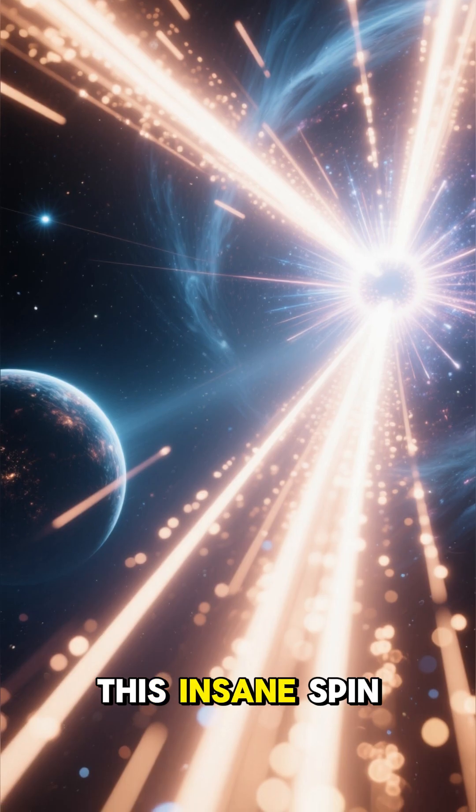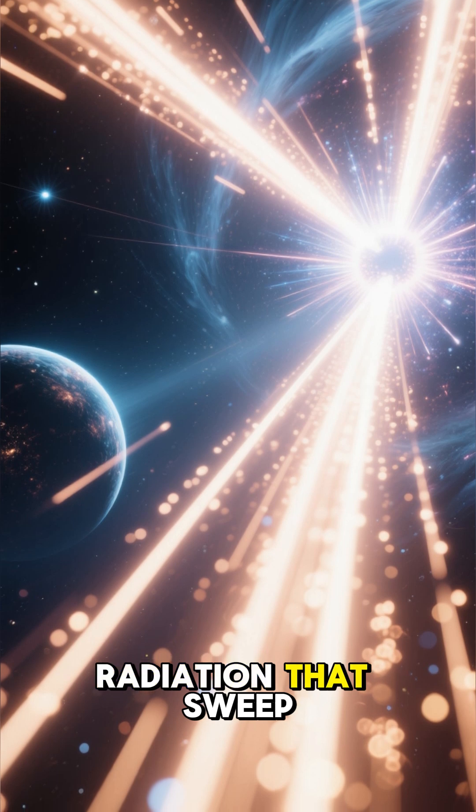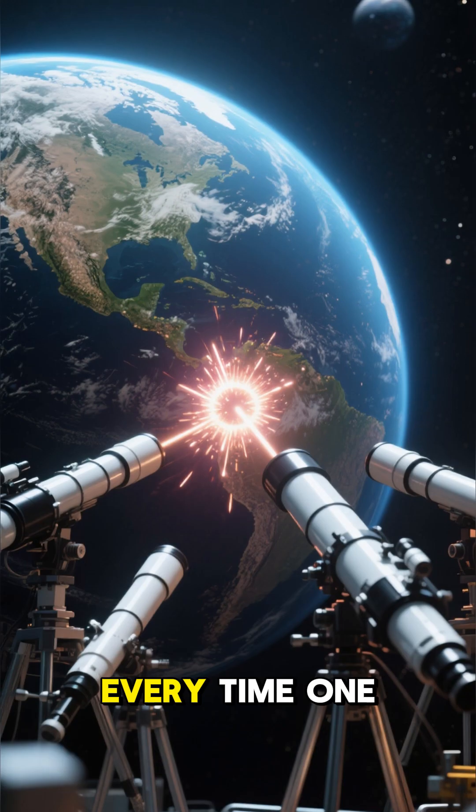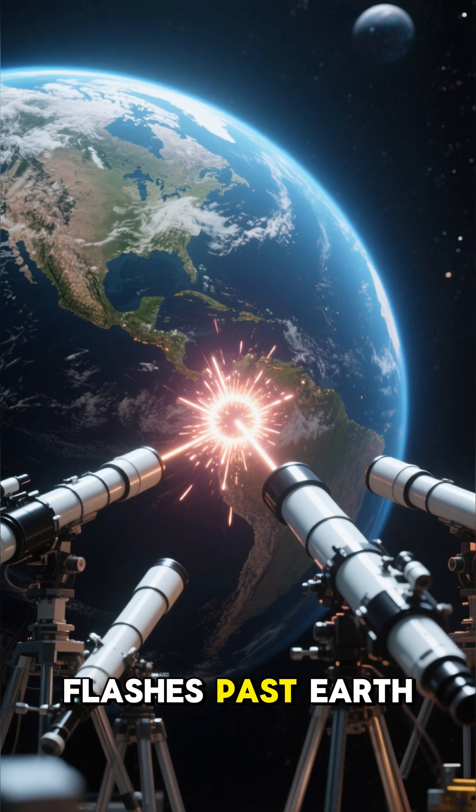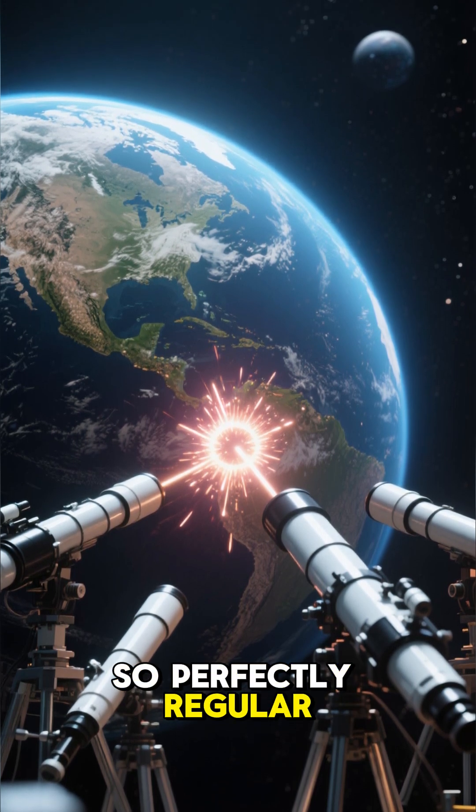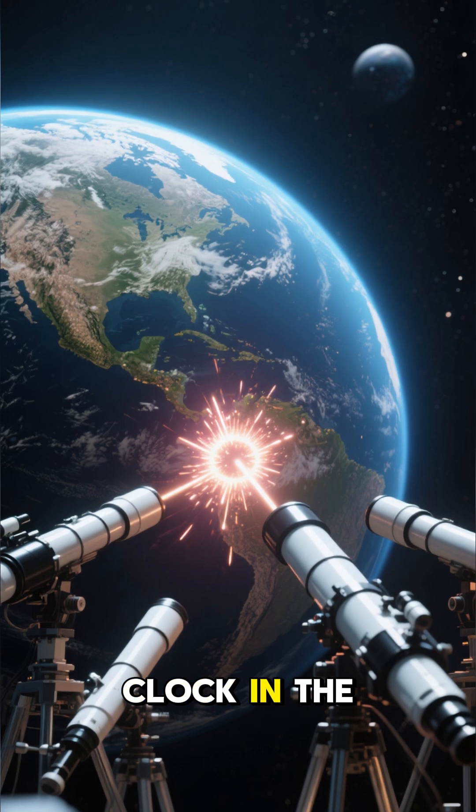This insane spin creates powerful beams of radiation that sweep across the universe like a cosmic lighthouse. Every time one of those beams flashes past Earth, our telescopes see a pulse. So perfectly regular, it's like the most accurate clock in the cosmos.